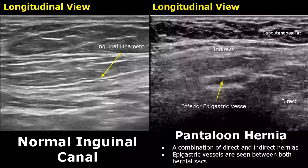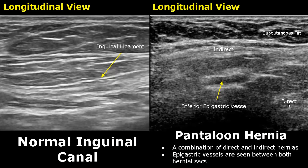A pantaloon hernia is a combination of direct and indirect hernia. The indirect hernia is seen superior and anterior to the epigastric vessel, and the direct hernia is seen inferior and posterior to the epigastric vessel. It is difficult to diagnose on ultrasound. The epigastric vessels are seen between both hernial sacs.